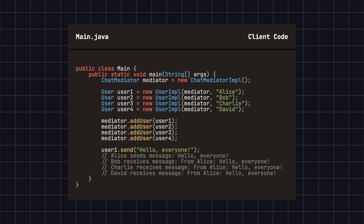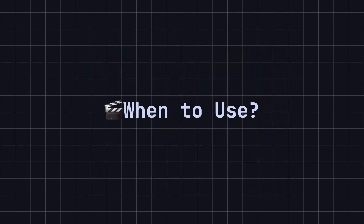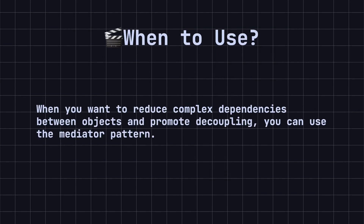As you can see, the mediator pattern simplifies communication between objects by introducing a mediator. Objects no longer reference each other directly, but communicate through the mediator. This significantly reduces coupling between objects, making the system easier to maintain and extend. When you want to reduce complex dependencies between objects and promote decoupling, you can use the mediator pattern. It simplifies communication and interaction between objects, making the system structure clearer and more maintainable.